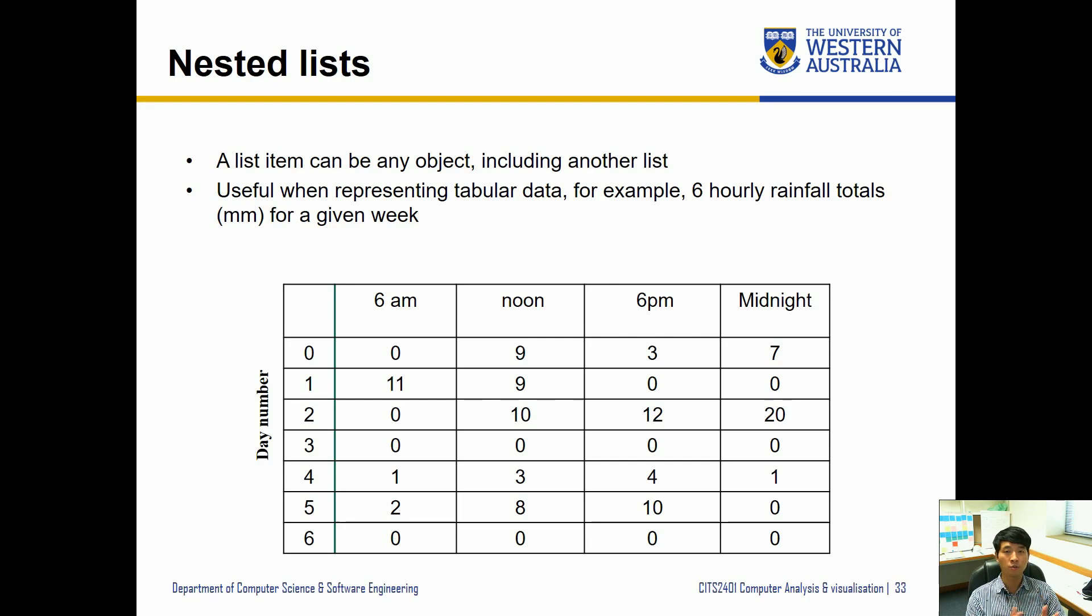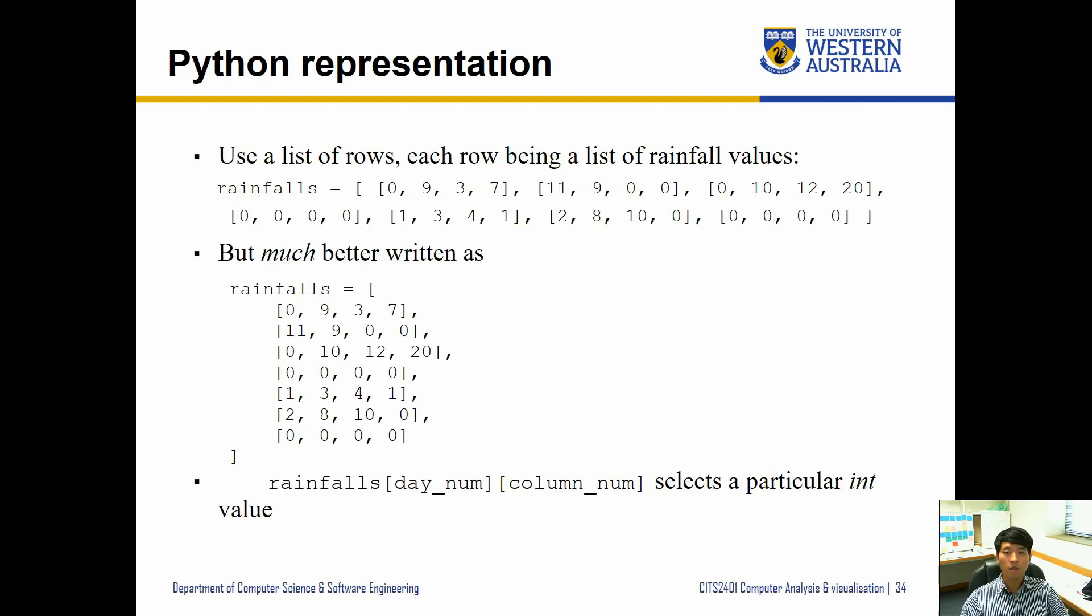This is useful when we want to represent some tabular data, for example like six-hourly rainfall totals for a given week as seen below. So let's convert this into our list structure in Python.